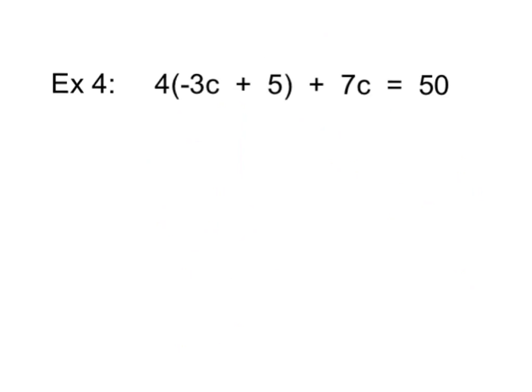We've got one more example, and we're kicking it up a notch. We're adding one more degree of difficulty here. Please write down example 4 into your notes. And, as always, the first thing we're going to do is distribute. So, we are going to multiply that 4 times the negative 3c, and that's going to give us negative 12c. Next, 4 times the 5. 4 times 5 gives me 20.